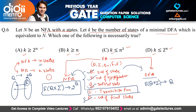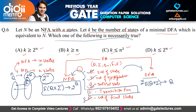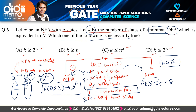For this question, if the number of states in the NFA is N, then any state can lead to 2^N different states. Therefore, for a minimal DFA with K states, K will always be less than or equal to 2^N. The correct answer is option D: K ≤ 2^N.